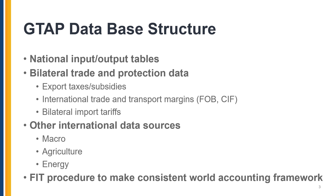Before diving into GTAP 11, let's briefly touch on the structure of the GTAP database. At its core, for the inter-industry linkages within country, we rely on national input-output tables. These are complemented with bilateral trade and protection data, which include trade flows, tariffs, export taxes and subsidies, and also international trade and transport margins. Other international data sources include macroeconomic data such as GDP and GDP expenditures, investments in final consumption, as well as agricultural and energy data. Both domestic and international data inputs are reconciled in a consistent world accounting framework using the so-called FIT procedure, which balances the different datasets.